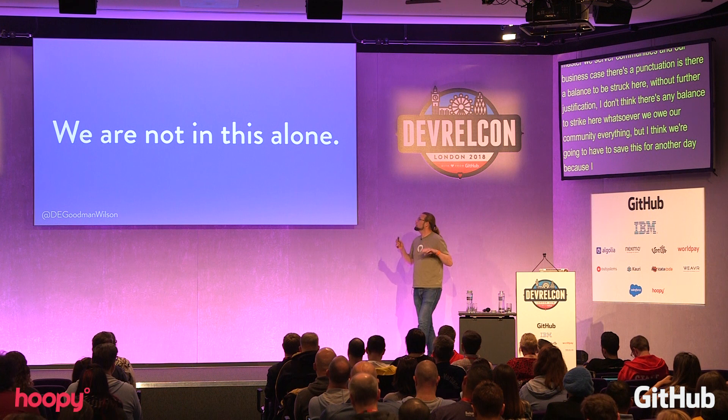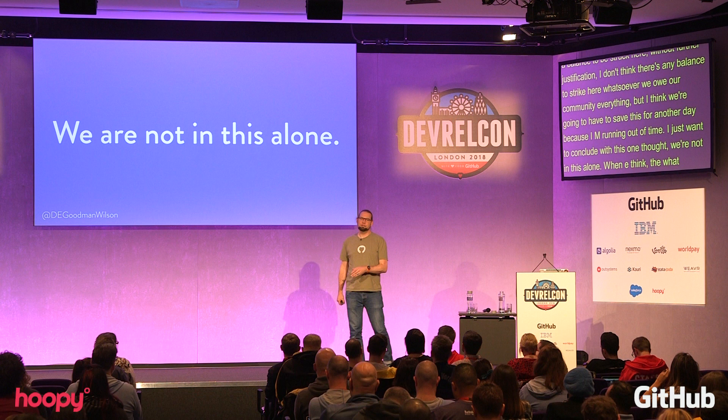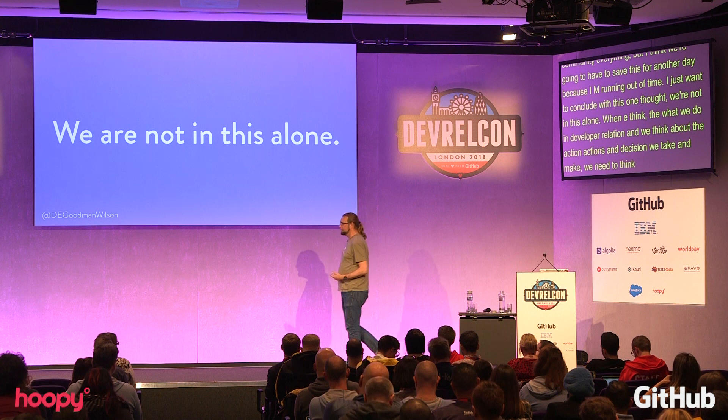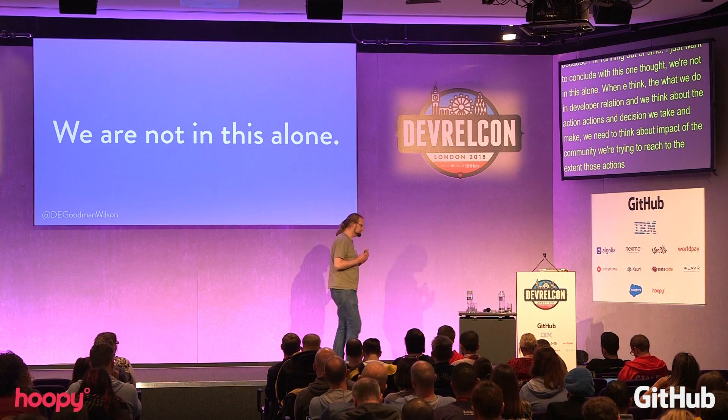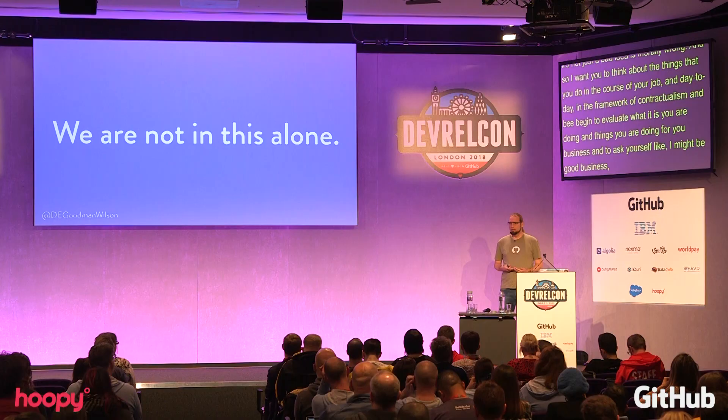So I just want to conclude with this one thought. We're not in this alone. When we think about what we do in developer relations, when we think about the actions and the decisions that we make, we need to think about the way that they impact the community that we're trying to reach. And to the extent that those actions serve to sever ties, serve to exclude aspects of this community, it's not just a bad idea — it's morally wrong. I want you to think about the things that you do in the course of your job in this framework of contractualism, and begin to evaluate what it is that you're doing, and ask yourself: it might be good business, but is it right? Thank you.